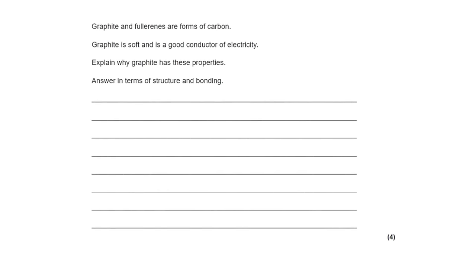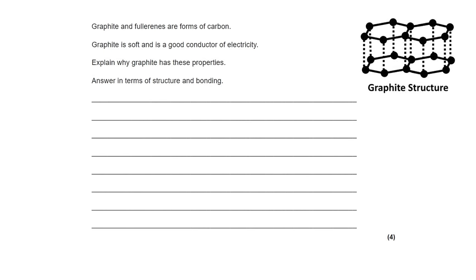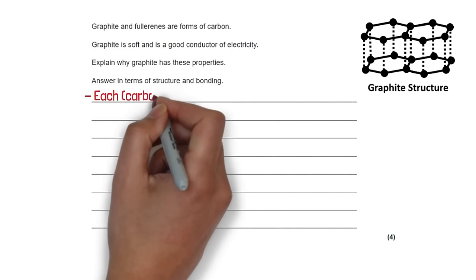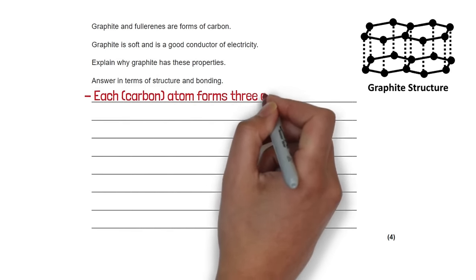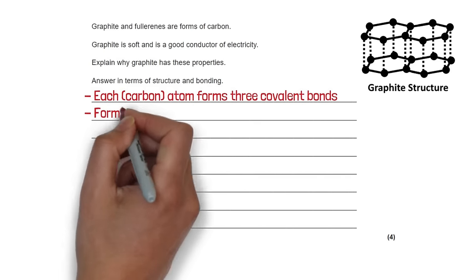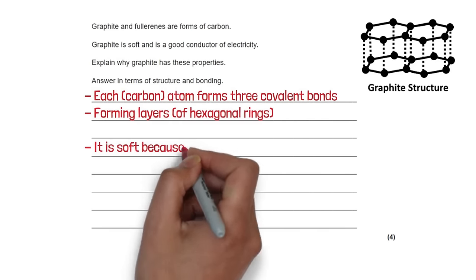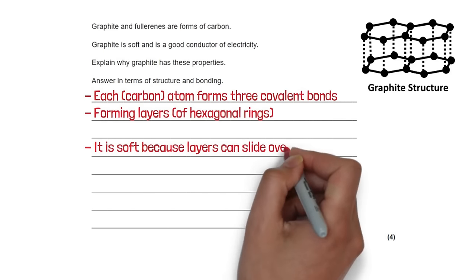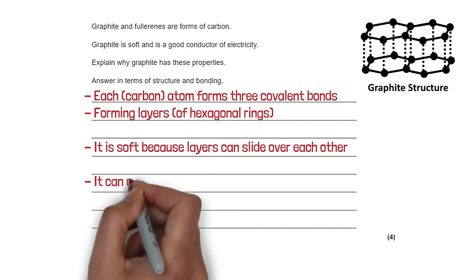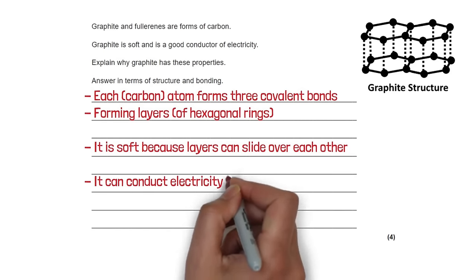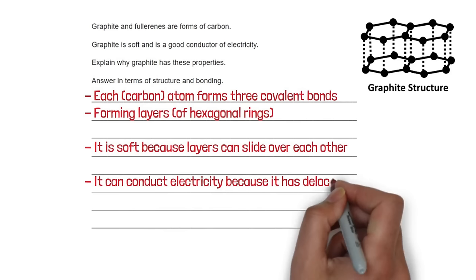Graphite is soft and a good conductor of electricity — explain why. Each carbon atom forms three covalent bonds, creating layers of hexagonal rings. This makes it soft because the layers can slide over each other. It conducts electricity because it has delocalised electrons.